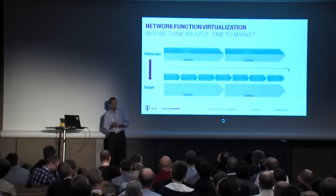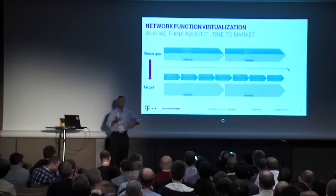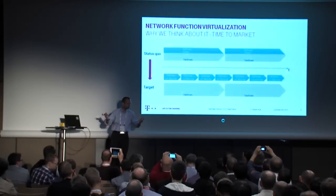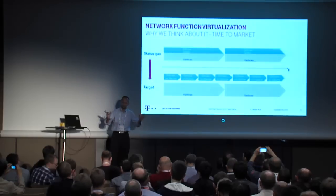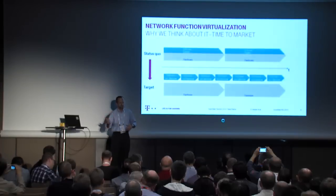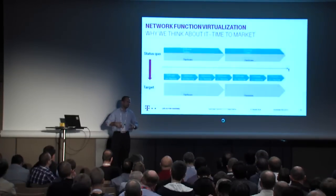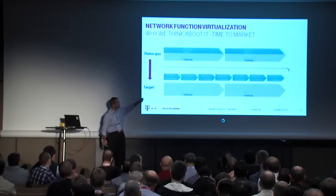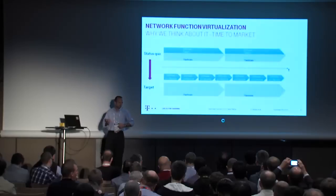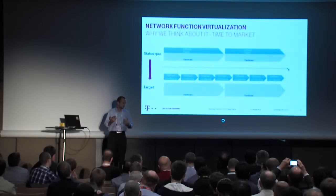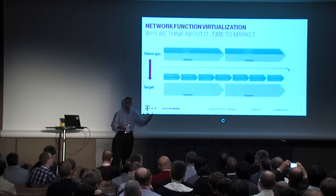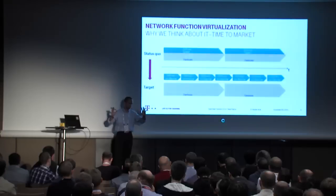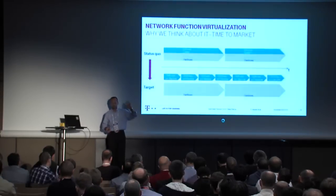Scaling and better usage of resources is one thing. The other is time to market — to decouple the hardware cycle and the software cycle. Currently we have minor releases of new software based on existing hardware, but a major release often requires a hardware change as well. A decoupling of hardware and software, as shown in the figure, is one key opportunity of network function virtualization we want to exploit. Scaling and time to market — the decoupling of hardware and software — are the two main drivers besides others.